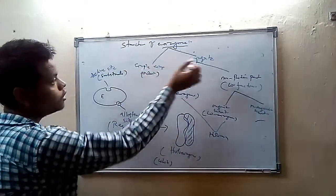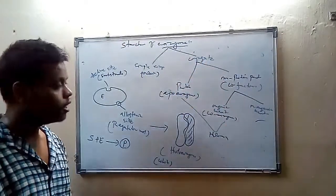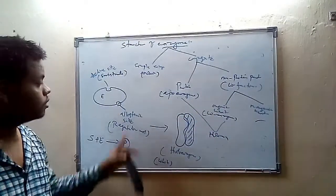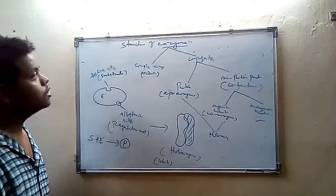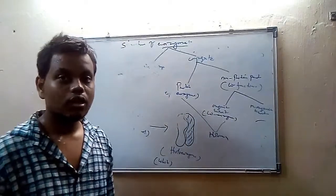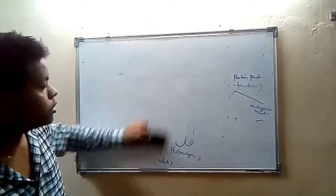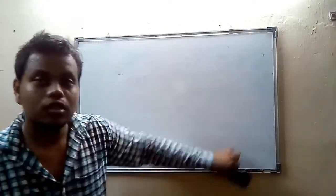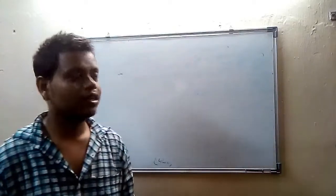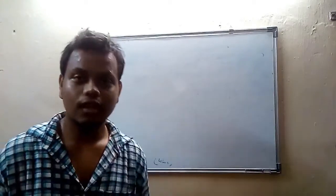Generally, maximum enzymes are conjugate enzymes where protein and non-protein parts are both present — that is called holoenzyme. This holoenzyme has two sites: one is called active site and another is called allosteric site. So in this video we discussed what is enzyme, their general properties, and their general structure. Further discussion will occur in the next video. Thanks for watching, and please subscribe and share if you liked this video.